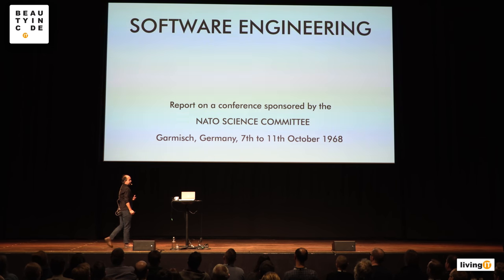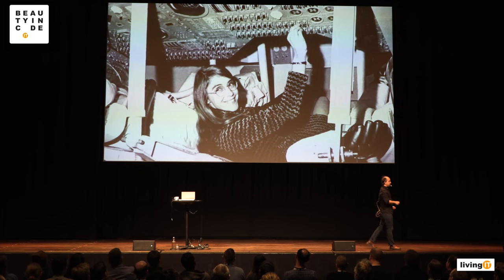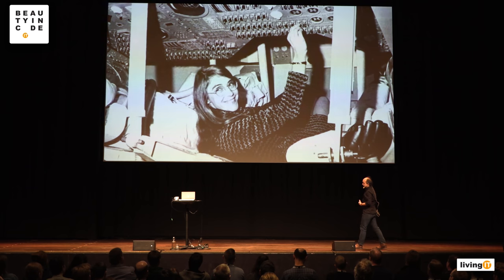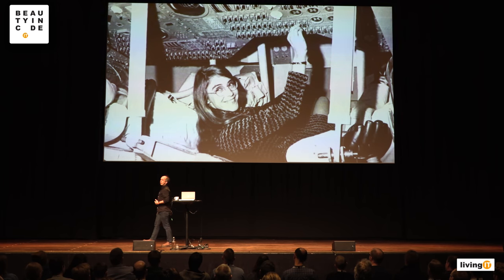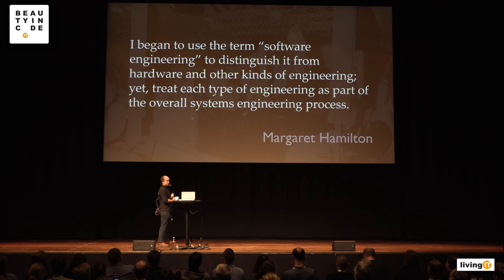Many people think the NATO software engineering conference coined the phrase 'software engineering' — but it doesn't come from there. It comes from Margaret Hamilton. She was involved in the moon program; she led a team responsible for a lot of the code. Back in the 1960s people weren't taking software seriously. As she said: 'I began to use the term software engineering to distinguish it from hardware and other kinds of engineering, yet treat each type as part of the overall systems engineering process.'